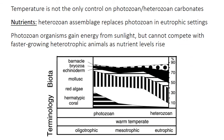Note that temperature is not the only control on photozoan and heterozoan carbonates — nutrients are also important. As nutrient levels increase from low-nutrient oligotrophic towards high-nutrient eutrophic settings, photozoan organisms like colonial hermatypic corals and red algae tend to decrease in abundance, while heterozoan groups like bryozoans and barnacles increase in abundance. The reason is that photozoan organisms get their energy from sunlight and don't do as well when nutrient levels are high, whereas high nutrient levels means more food for heterozoan organisms, so they're better able to compete.